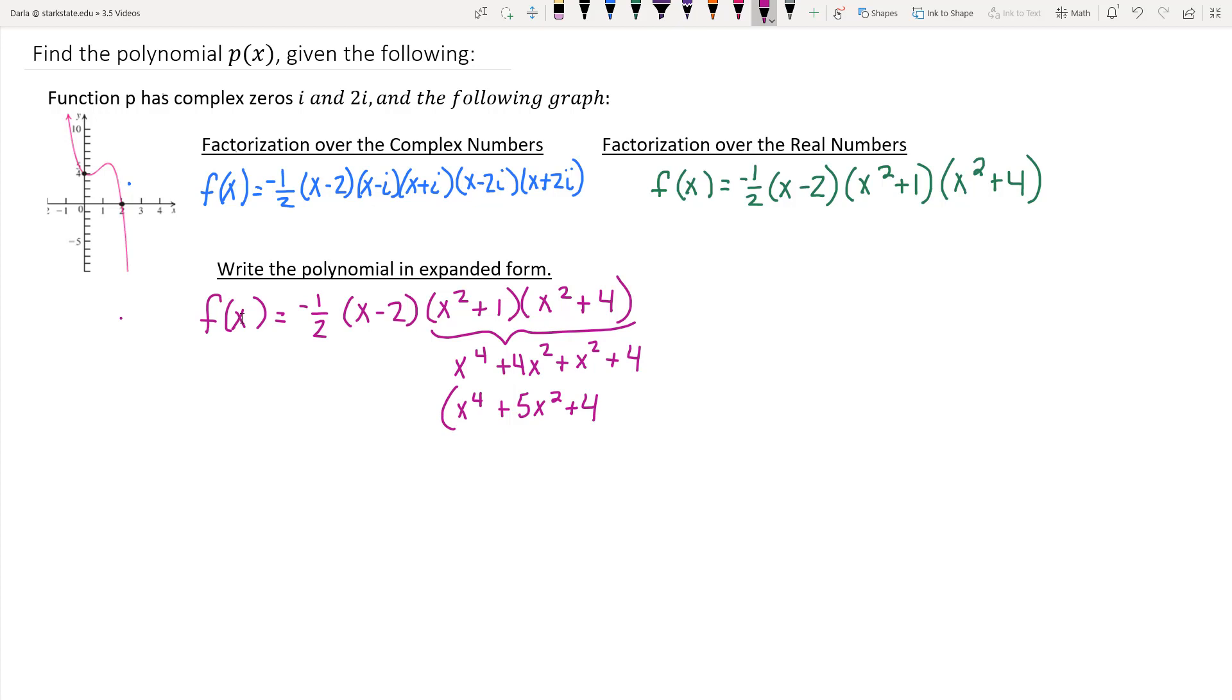And then that factor needs to be multiplied by x minus 2, which we'll do by distributing both the x and the negative 2. And then after that we will multiply by the negative half. So I'm going to go ahead and rewrite my negative half, since we're not doing that multiplication yet. And now I'm going to focus on multiplying the x minus 2 by that x to the fourth plus 5x squared plus 4.